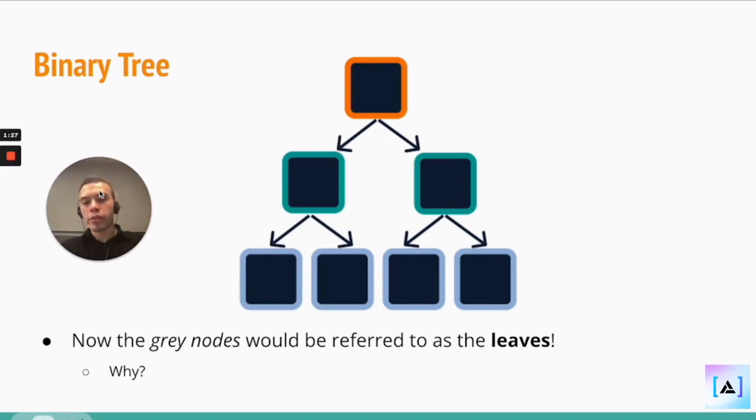Now, we add more nodes to the tree, the gray nodes, and they are now the leaves. Why? Because they are now at the end of the tree. They have no further children. And the nodes that used to be the leaves are no longer leaves because they have children.